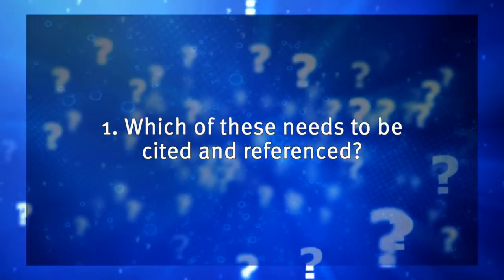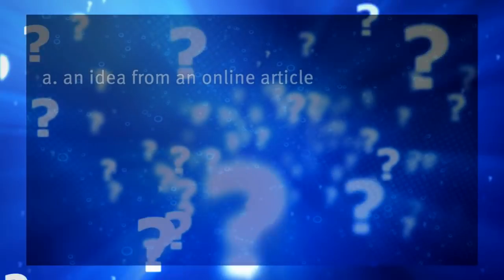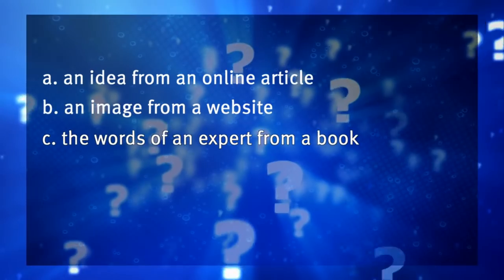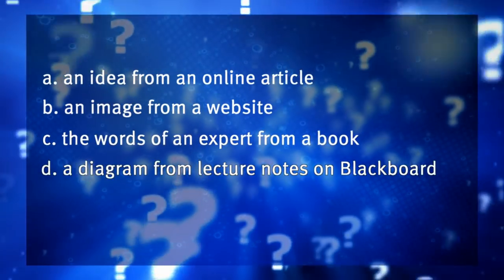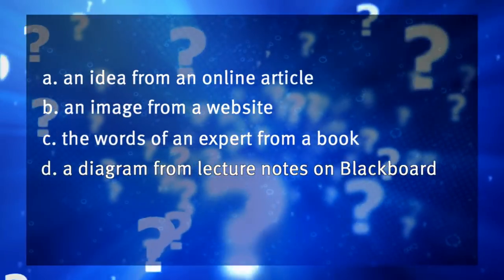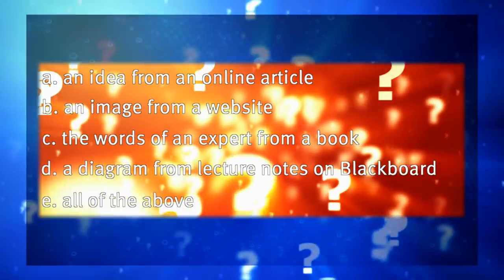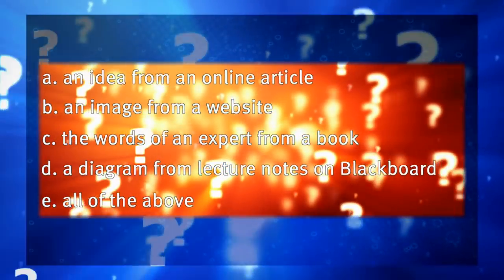Alright, player one. Your lecturer wants you to build on the ideas of other people to show your learning. How will you do this? Question one: which of these needs to be cited and referenced? A — an idea from an online article. B — an image from a website. C — the words of an expert from a book. D — a diagram from lecture notes on Blackboard. E — all of the above. That's right! All of these need to be referenced so that you can show that you've used evidence to support your thinking.